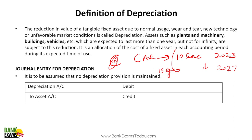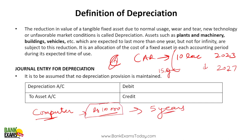That is why there is a concept of depreciation — you have to account for it. For example, for my teaching business I bought a computer for 1 lakh rupees, and I'm going to use it for 5 years. If I want to record this in my books and show it in my profit and loss account to pay taxes, I can't show the full 1 lakh as expenditure in the very first year. I have to distribute it over the 5 years.